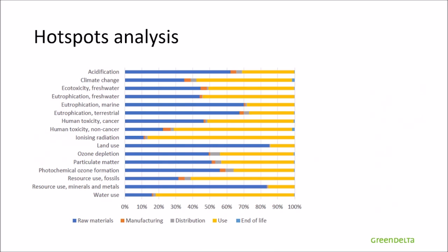This graph illustrates the contribution of life cycle stages to the total results. We chose to group the polyester, zipper, and textile production into the raw materials category, to separate what is directly in manufacturing — such as electricity — from the actual extraction and pre-processing of raw materials. Most of the environmental impacts are due to the use stage, and a significant part also comes from raw materials. Manufacturing, distribution, and end of life are not really significant — in some cases their contribution is barely visible.